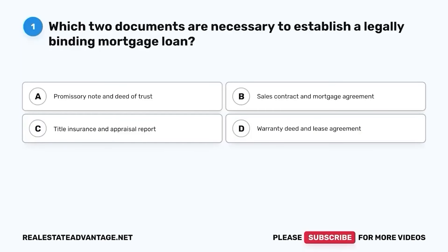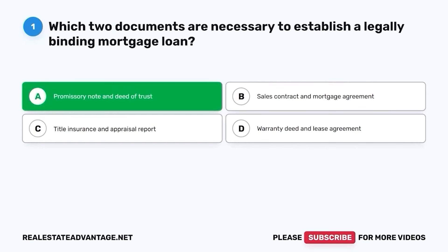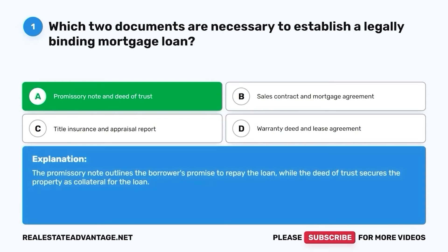Question 1. Which two documents are necessary to establish a legally binding mortgage loan? A. Promissory Note and Deed of Trust. B. Sales Contract and Mortgage Agreement. C. Title Insurance and Appraisal Report. D. Warranty Deed and Lease Agreement. The correct answer is A. Promissory Note and Deed of Trust. The promissory note outlines the borrower's promise to repay the loan, while the deed of trust secures the property as collateral for the loan.